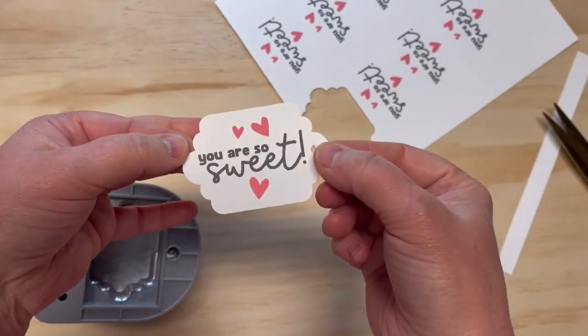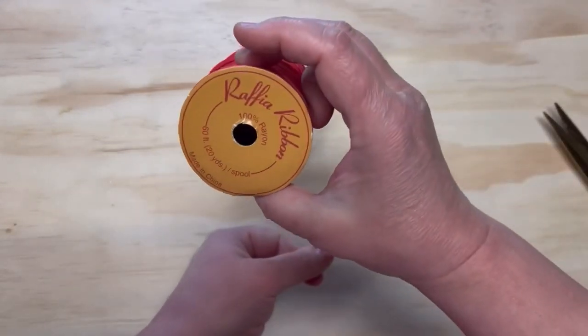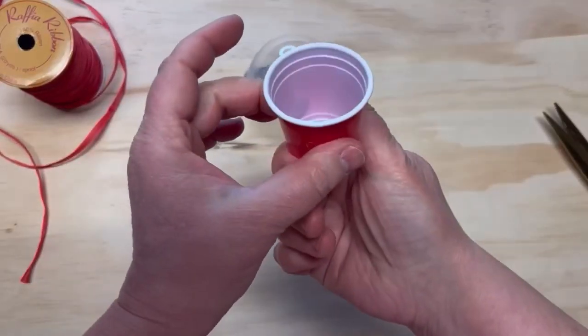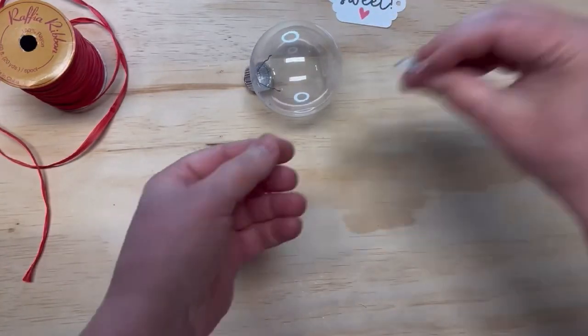And it says 'you're so sweet.' Now I don't know about you, but I have 1,500 of these ornaments, so I figured why not. I also have some raffia ribbon and a little solo mini cup and a little pull tab from a soda can.